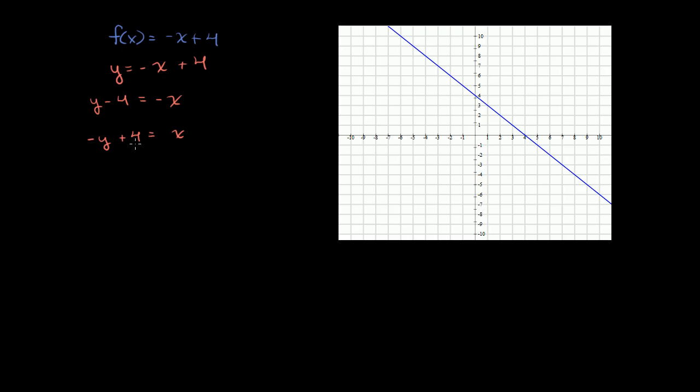Or just because we're always used to writing the dependent variable on the left-hand side, we could rewrite this as x is equal to negative y plus 4. Or another way to write it is we could say that f inverse of y is equal to negative y plus 4.